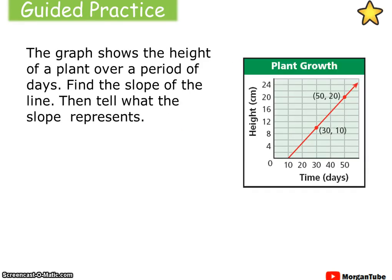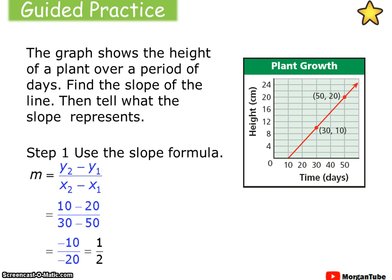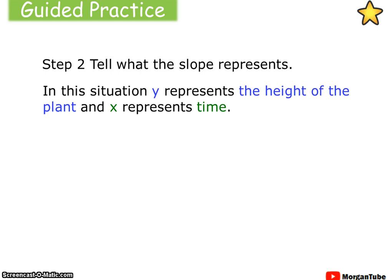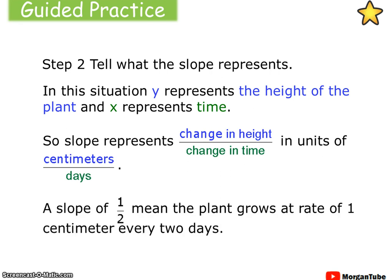The graph shows the height of a plant over a period of days. Find the slope of the line, then tell what the slope represents. Pause your video now. Welcome back. Using the slope formula with the two points given, we get a slope of 1 half. In the context of the situation, y represents the height of the plant and x represents the time. So slope represents change in height over change in time, in units of centimeters and days. A slope of 1 half means the plant grows at a rate of 1 centimeter every 2 days.